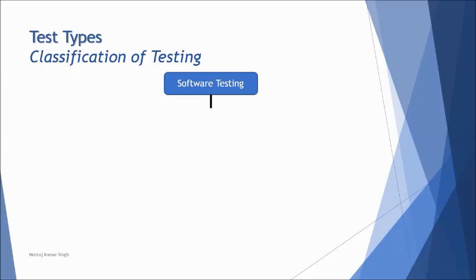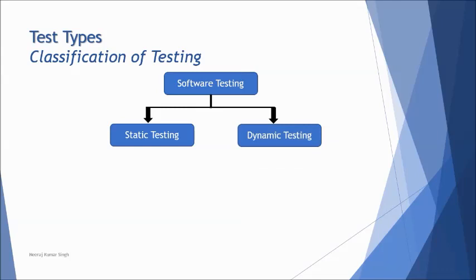First, let's understand the classification of testing. Software testing is classified into two categories: static testing and dynamic testing. Static testing is about non-executable work products being tested for ambiguities, omissions, insufficient information, and flaws in the document. Dynamic testing deals with the executable part of the application — you execute the application and test it using test cases. The major difference is that static is non-executable and dynamic is executable.